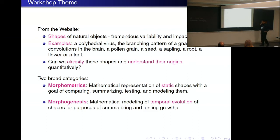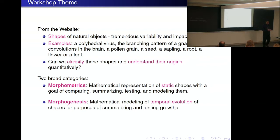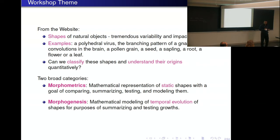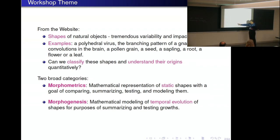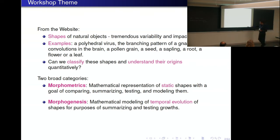Morphogenesis is much more challenging, relatively speaking, because it brings in the time component. One talks about time series and longitudinal data of shapes — shapes are growing and you observe them over time. One wants to model the growth, not just take individual snapshots and compare them, but actually put some science behind the growth. From a statistical perspective, one can model the growth, talk about normality, abnormality, and differences between populations of shapes based on this growth model.